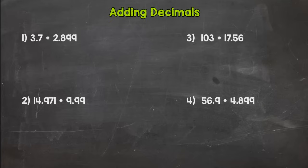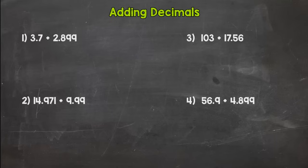Adding decimals is very similar to just adding whole numbers. There's just one little rule involved — actually a couple little things. But if you have adding down, you'll be good with this. The best way to learn is to go through some examples. You can either write these problems out with me or just watch and try some on your own afterwards. I would suggest writing these out with me — that will be more beneficial. So let's start with number one.